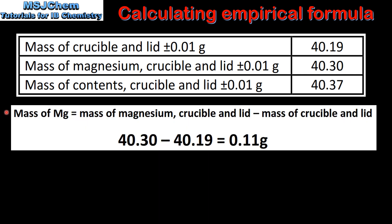The next step is to determine the mass of magnesium. To do this, we subtract the mass of the crucible and lid from the mass of the magnesium, crucible, and lid, which gives us 0.11 grams.